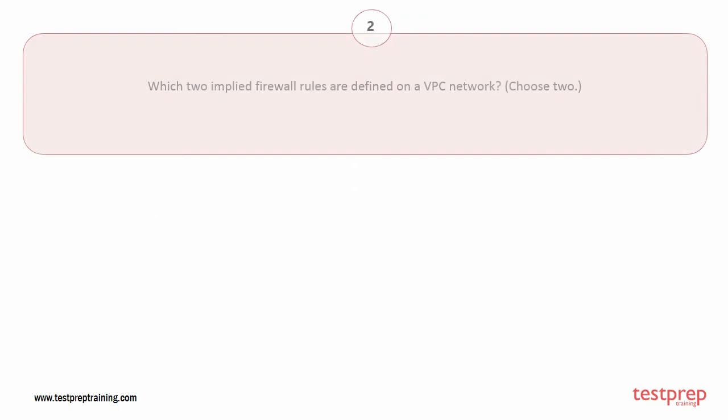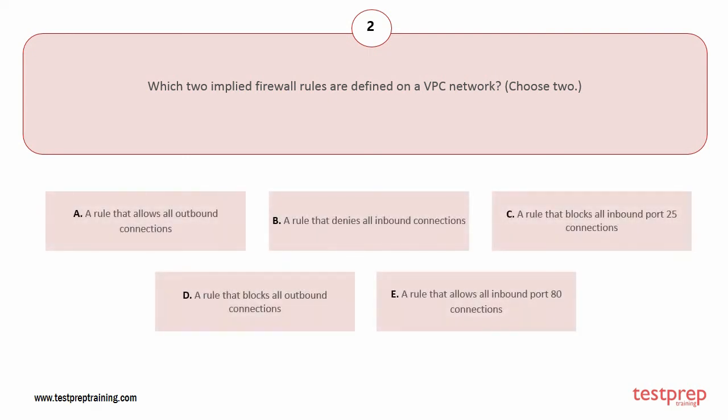Question number two: which two implied firewall rules are defined on a VPC network? Choose two. Your options are: A) a rule that allows all outbound connections, B) a rule that denies all inbound connections.